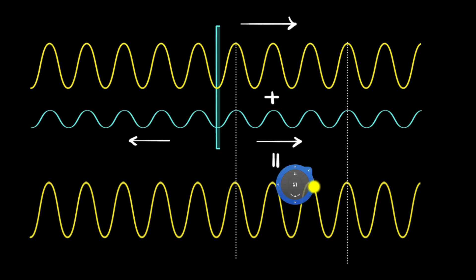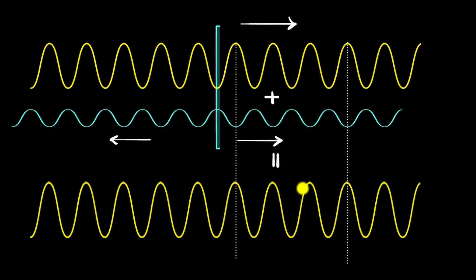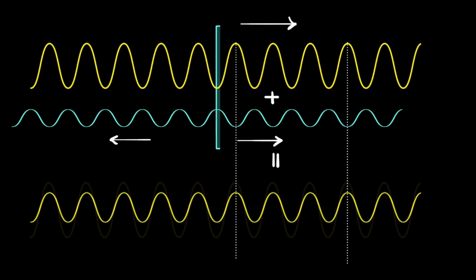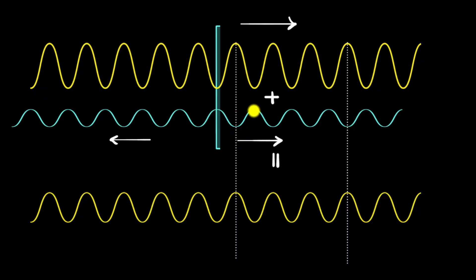But what if the secondary wave had its peaks matched exactly with the valleys of the original wave? Now they tend to cancel each other. Because this secondary wave is generated by only a tiny sliver of glass, its height is very tiny compared to the original. The net result is a wave that looks much like the original but with decreased peaks and valleys. We call this destructive interference. If this wave had the same height, they would completely destroy each other — peaks canceled by valleys and valleys by peaks.